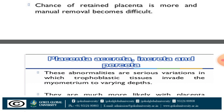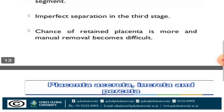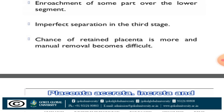Clinical significance of placenta membranacea: normally the placenta is attached at the upper segment of the uterus, but if placenta membranacea is present, some part of the placenta extends to the lower segment of the uterus. During the third stage of labor, when separation of the placenta occurs, if placenta membranacea is present, the separation does not occur properly — it is imperfect. The chances of retained placenta are higher, and manual removal becomes difficult.